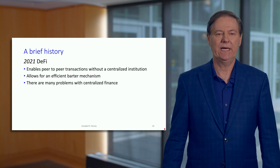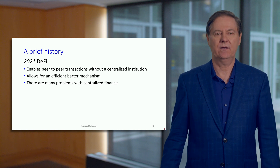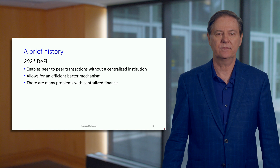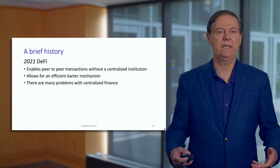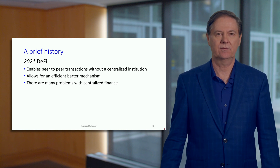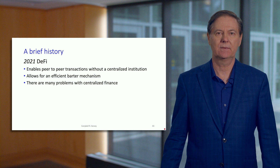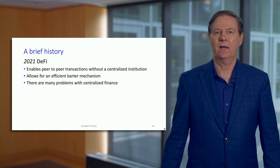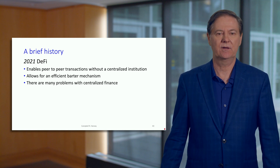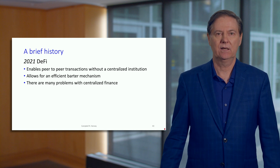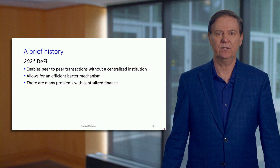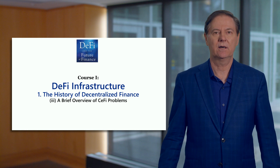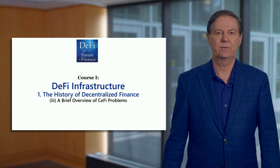Coming to today, decentralized finance is going to enable efficient peer-to-peer transactions without the centralized institution. We will deal with the idea of tokenization of almost anything throughout the four courses — this goes well beyond Bitcoin and Ethereum, and the possibility of an efficient barter mechanism. One of the themes in this course is that decentralized finance actually opens up the possibility of returning to barter, but in a much more efficient way. Next, we'll talk about some of the problems with decentralized finance.